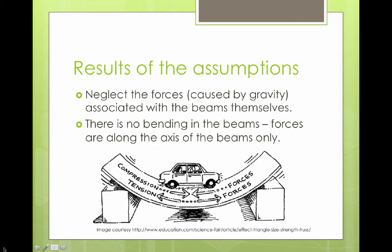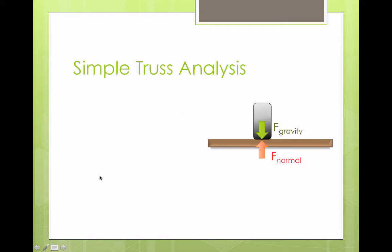This means that, in addition to our free joint assumption, we have no bending or moment, which means the bending force or rotational force in the beams. So we can assume that the forces are along the axis of the beams only.